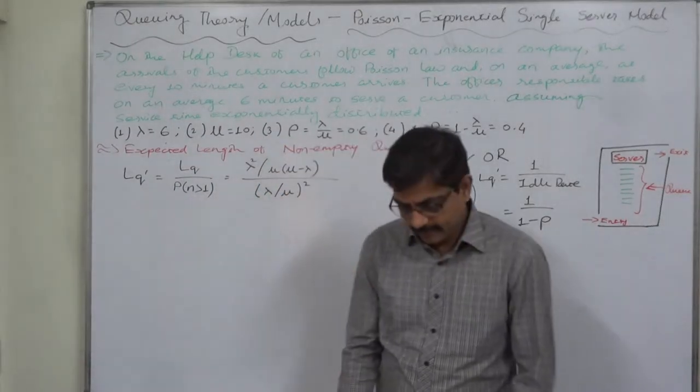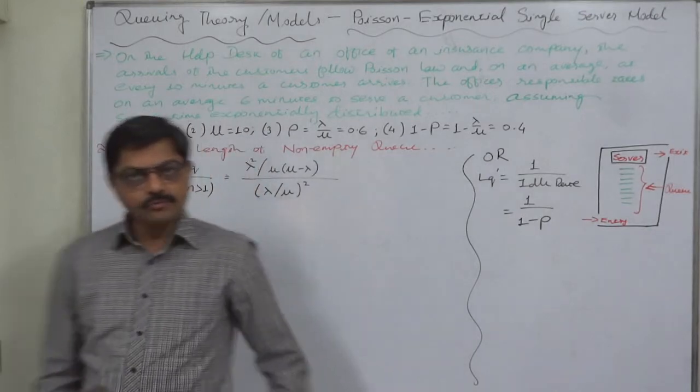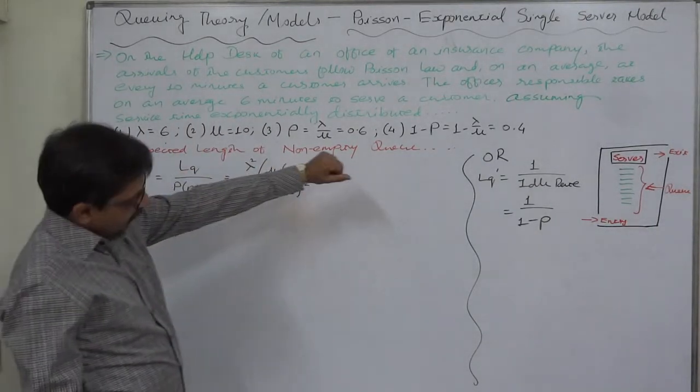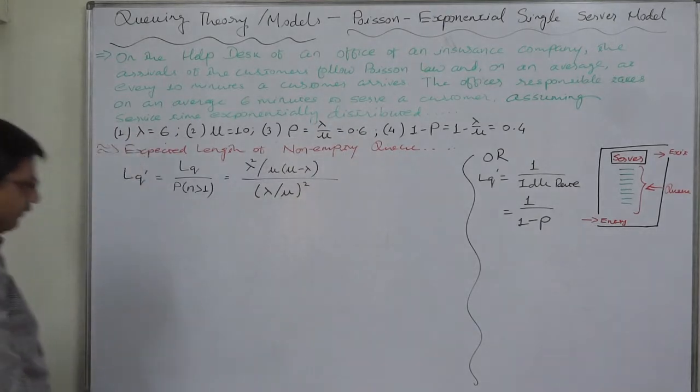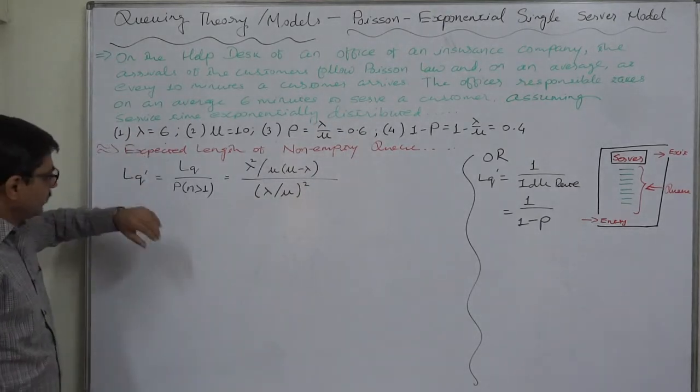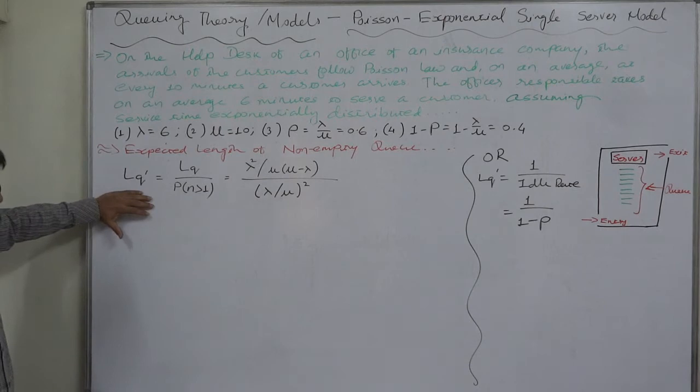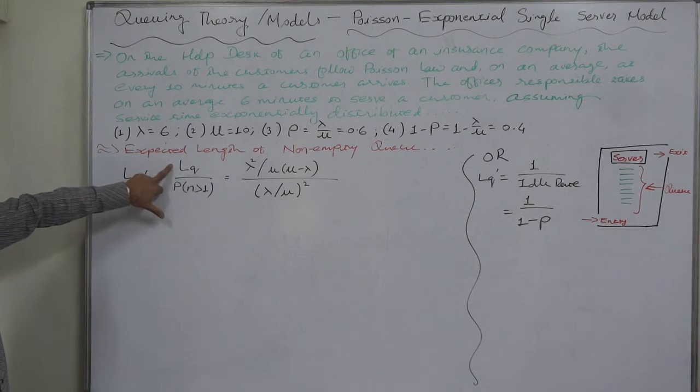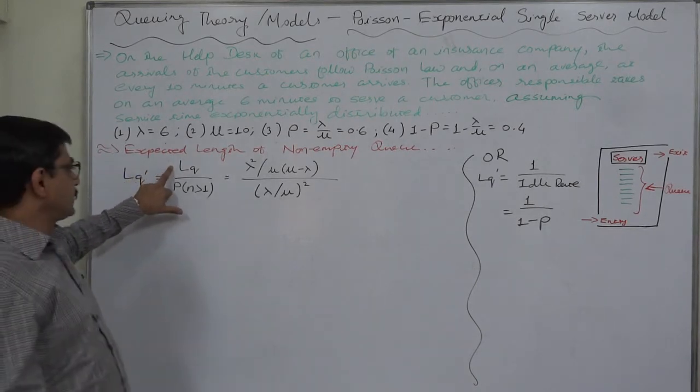Hello and welcome. Now this time we are going to calculate the expected length of a non-empty queue for the same case. The sign is LQ dash or LQ apostrophe. The logic is LQ, expected number of customers in the queue, divided by the probability of more than one customer.